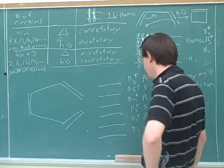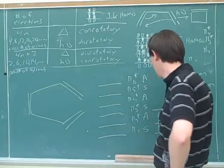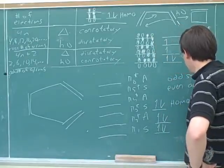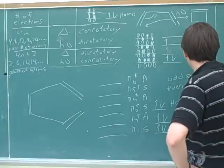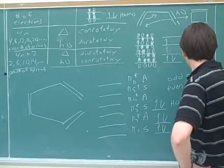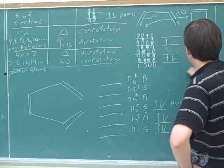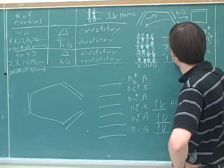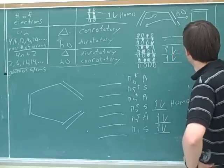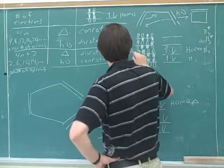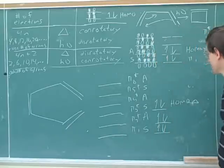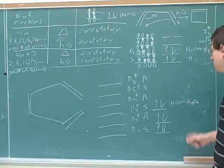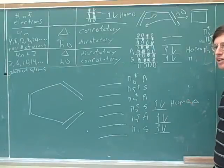How many pi electrons do we have? Six. So in the thermal case, this would be the HOMO. Now notice, then, is the HOMO going to be symmetric or antisymmetric? Symmetric. But in the thermal case with only 4 pi electrons, the HOMO was antisymmetric. So this explains why, when we go from the thermal case here to the thermal case here, we go from conrotatory to disrotatory.